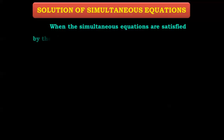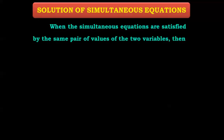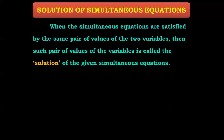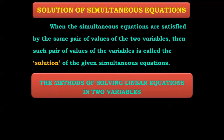Now we need to learn how to find the solution of simultaneous equations. When simultaneous equations are satisfied by the same pair of values of two variables — suppose x and y — that pair of values is called the solution of the given simultaneous equations. In this chapter we are going to study different methods to find the solution.